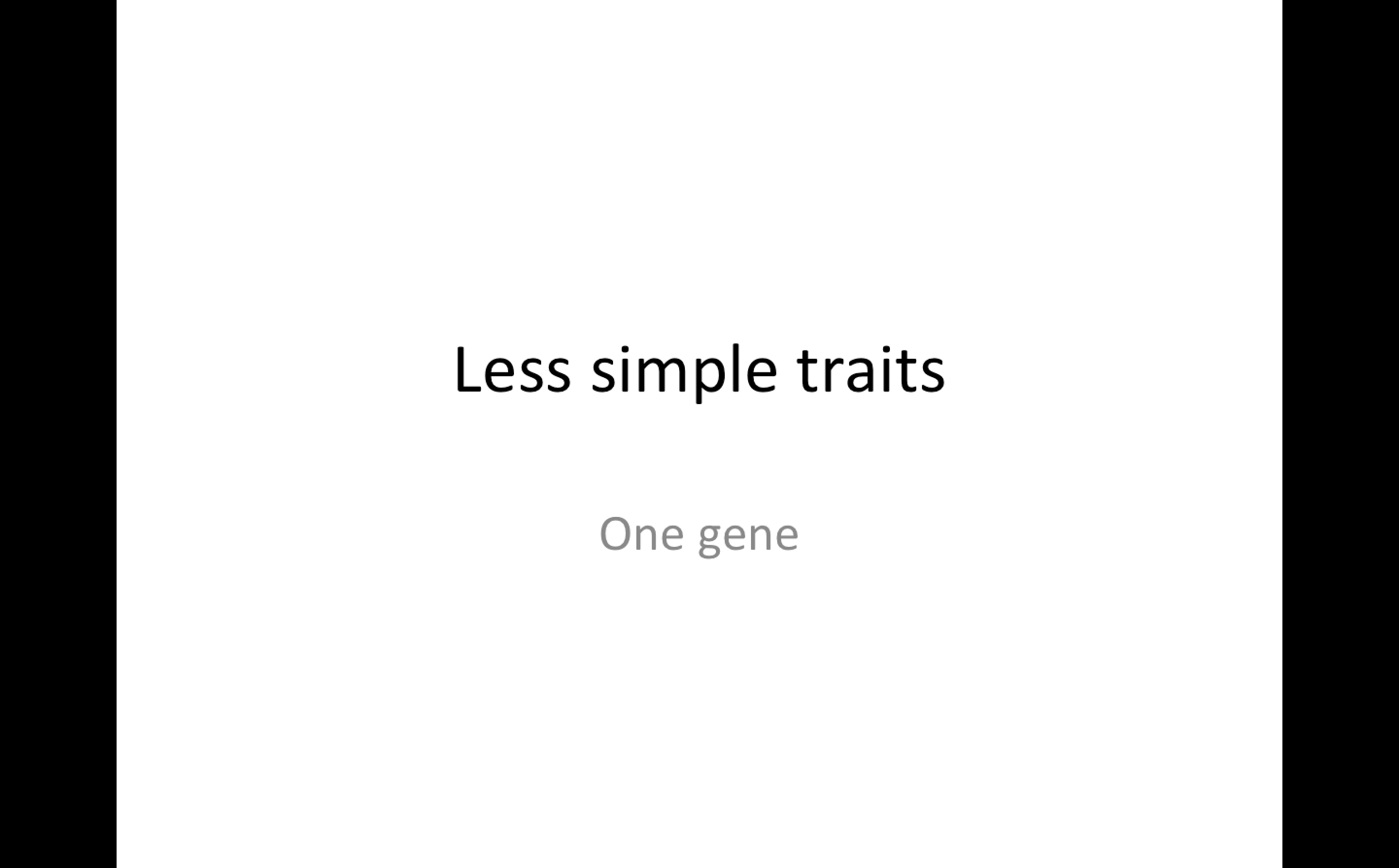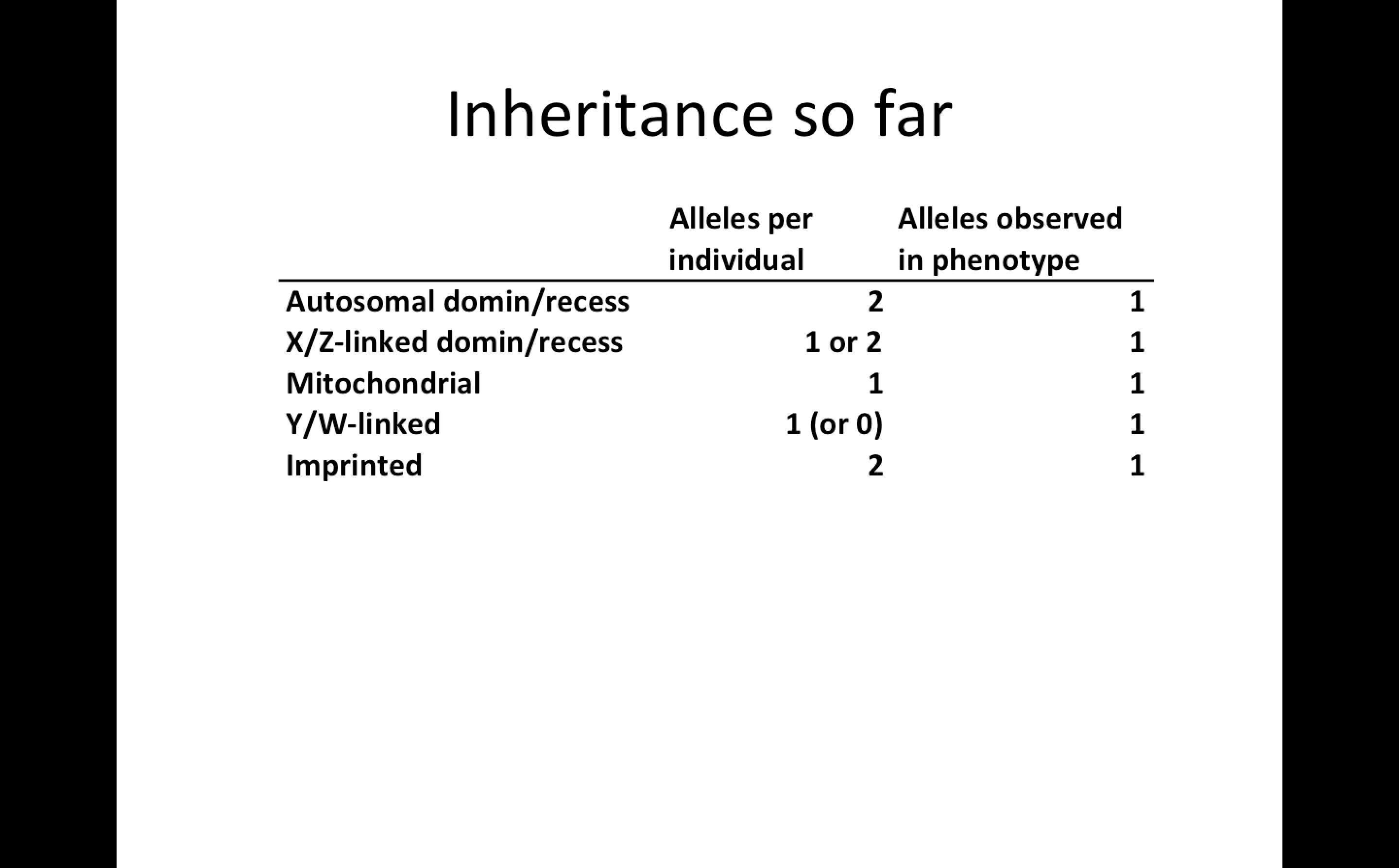In this video, I'd like to talk about less simple traits, traits that go beyond recessivity and dominance. So far, we've discussed five kinds of inheritance: autosomal dominant and recessive, X or Z linked dominant and recessive, mitochondrial, and then Y or W linked and imprinted.